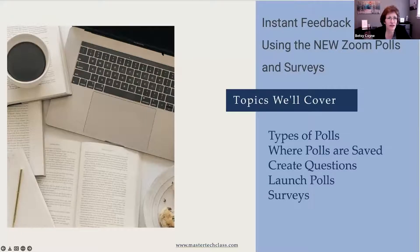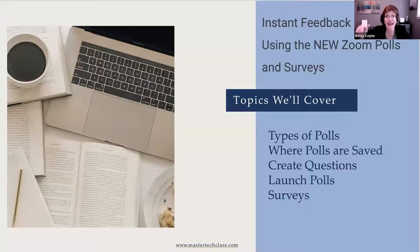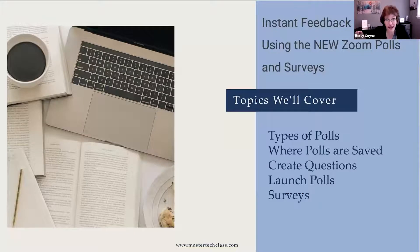What we're going to talk about today starts with the types of polls, then we're going to talk about where these live — where are the polls saved. Then we're going to talk about creating questions for instant feedback from your audience, and how you can launch those right inside the meeting. And then finally, there is something called a survey. The one thing I want you to remember about a survey is that it happens after the meeting. If you want to gather feedback but don't want to do it during the meeting, you can put the questions into a survey, and when they end the meeting, they're prompted with the survey on their way out.